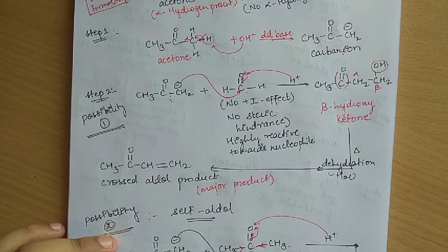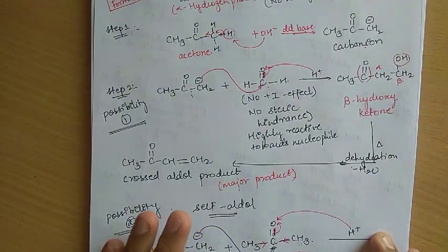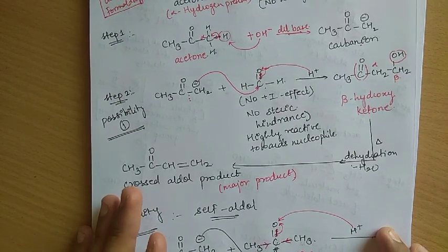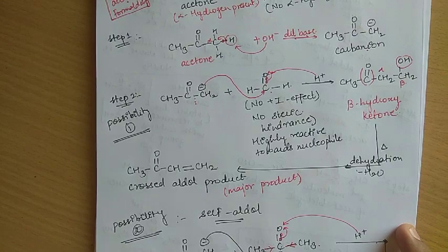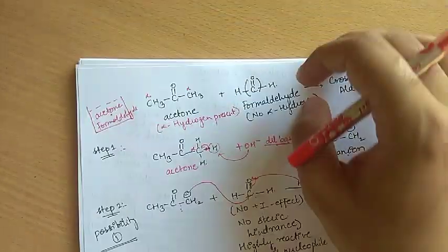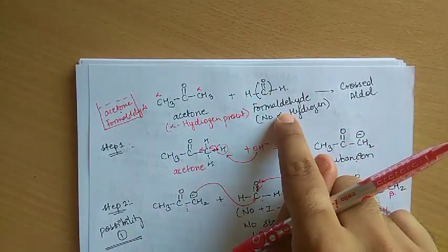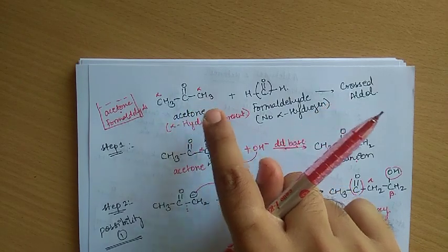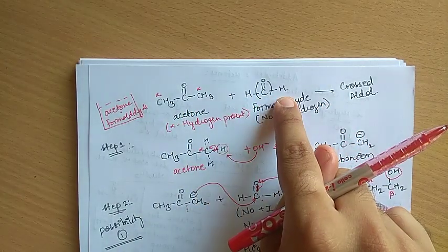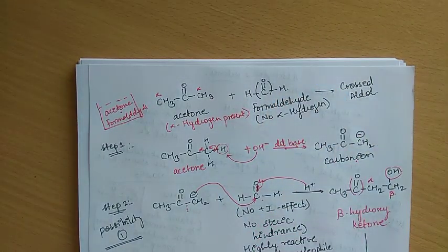We have looked at self-aldol condensation and crossed aldol condensation. In the next video, we will look at another type of crossed aldol reaction where both compounds have alpha hydrogens. When both compounds have alpha hydrogens, what will happen — we will see that in the next video. Thank you.